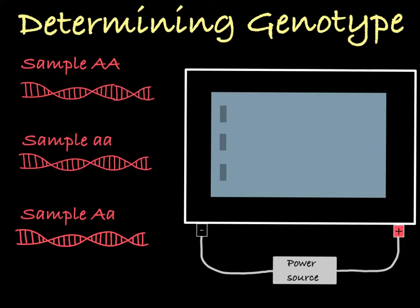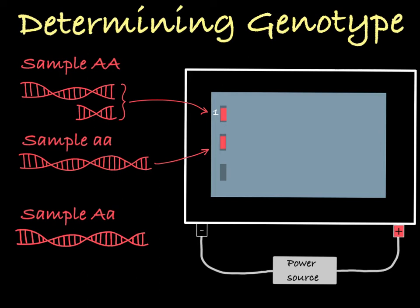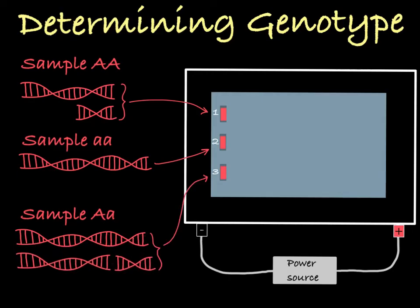So let's say I apply a restriction enzyme to the DNA sample from a person with the genotype big A, big A, and I inject this sample into lane one of my gel. Then I add restriction enzyme to a sample from a person with the genotype little a, little a, and I inject this sample into lane two. Then I run current through the gel and watch the DNA travel. In lane one, the DNA that contained only big A alleles separates into two distinct bands — this band contains all the medium-sized fragments, and this band contains all of the smaller-sized fragments.